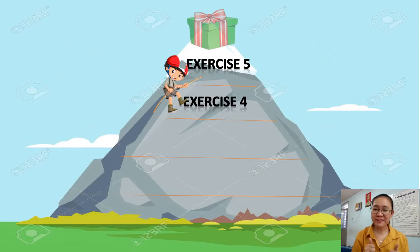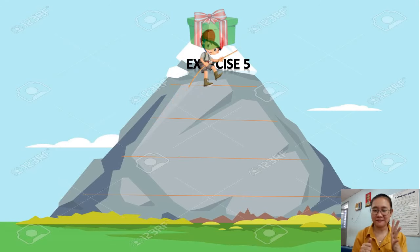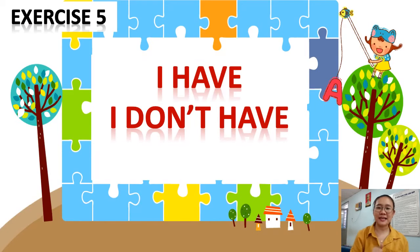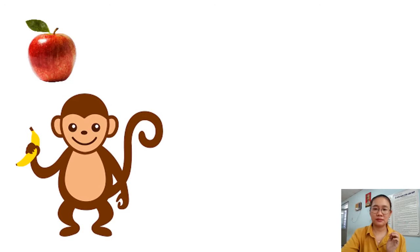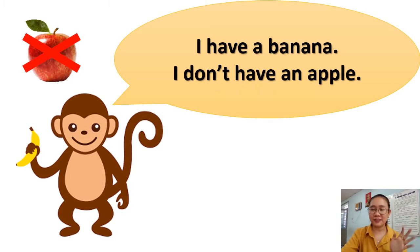Yes, we finished Exercise 4! Now the last exercise — try your best, let's do Exercise 5! Exercise 5 is about 'I have' and 'I don't have'. Can you remember? Look at the picture — it's a monkey, and in his hand is a banana, but no apple. So he says: I have a banana. I don't have an apple.